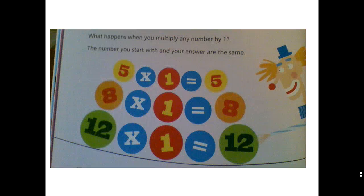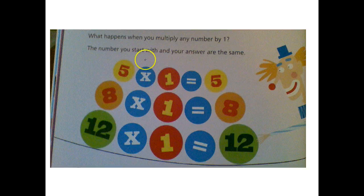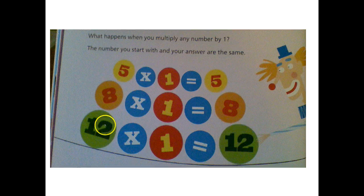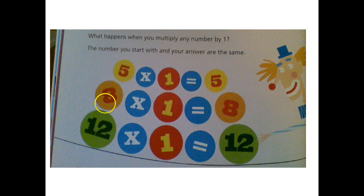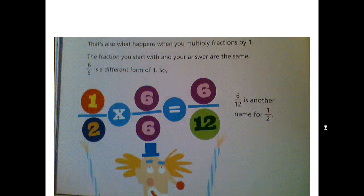What happens when you multiply any number by one? The number you start with and your answer are the same. Five times one is five. Eight times one is eight. Twelve times one is twelve. When we multiply by one, we call that the identity property. The number keeps its same identity — it's almost like it's looking in a mirror. So that also happens when you multiply fractions by one.